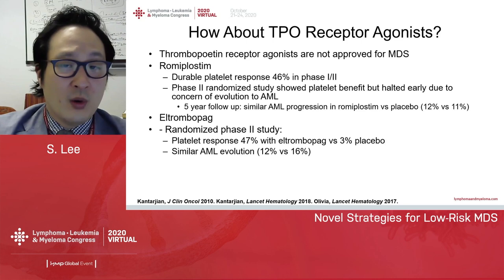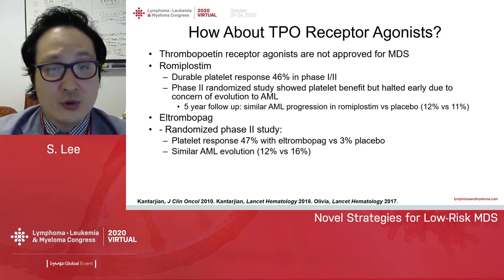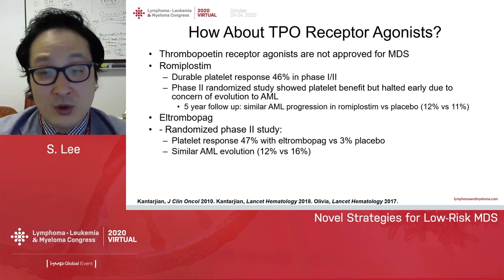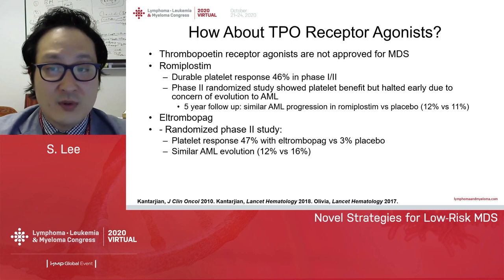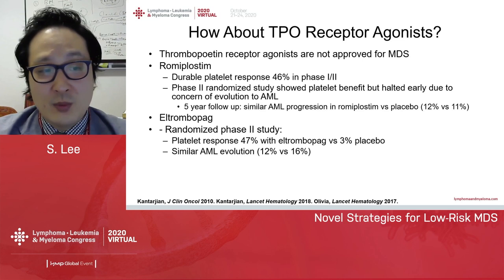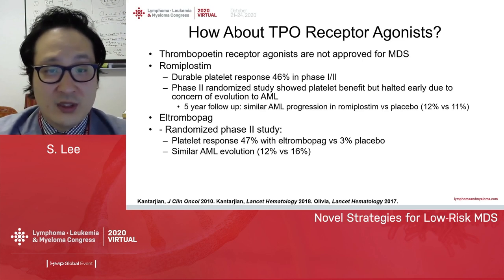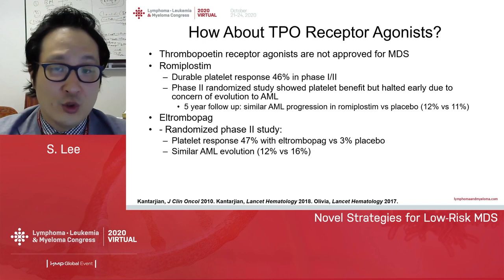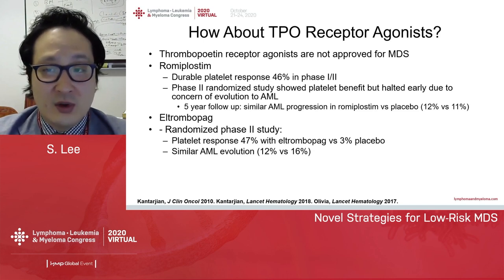It is important to note that thrombopoietin receptor agonists are not currently approved for MDS; however, two TPO agonists have been studied. Romiplostim was studied in phase 1-2 trials with durable platelet response of 46%, and a phase 2 randomized trial showed platelet benefit but was halted early due to concern of evolution to AML with increased blast counts. Five-year follow-up showed similar AML progression on romiplostim compared to placebo. Eltrombopag was also studied in a randomized phase 2 study with 47% platelet response compared to 3% for placebo with similar rates of AML transformation. TPO agonists can improve platelet counts in lower-risk MDS patients, although transient increase in blasts can occur, in which case the agent should be stopped.